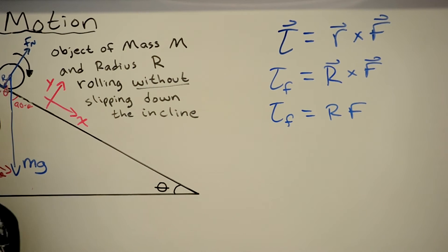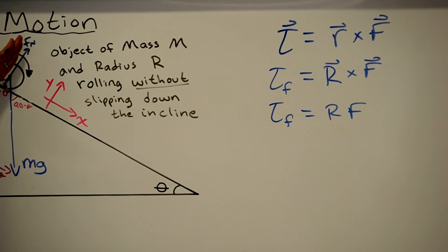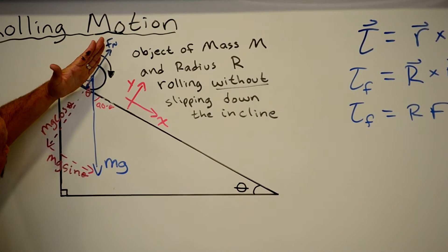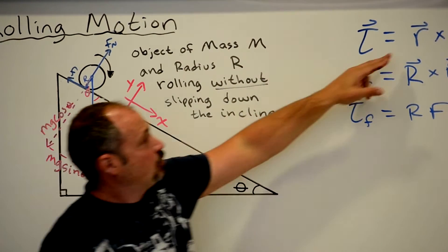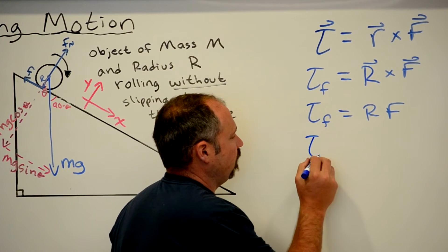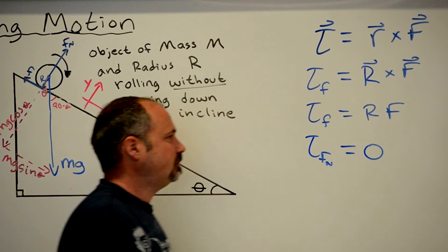Now, for the normal force, the normal force points like this. And the distance from the application of the force to the pivot also points like this. So they're parallel. Cross product of two parallel vectors is zero. So there is no torque from the normal force.